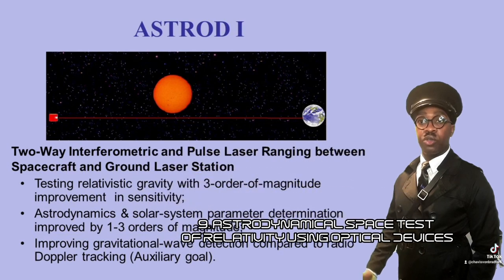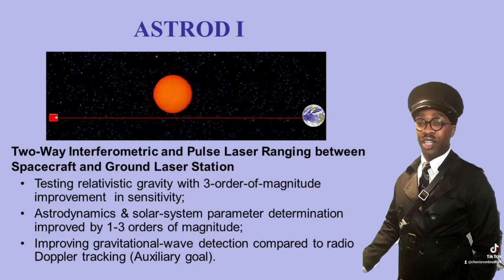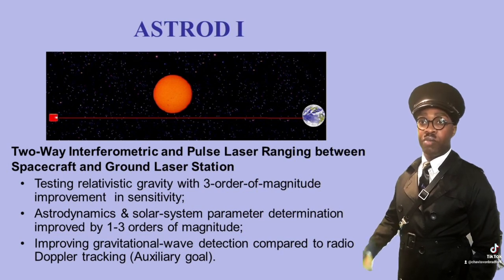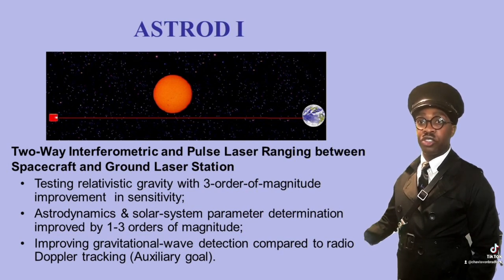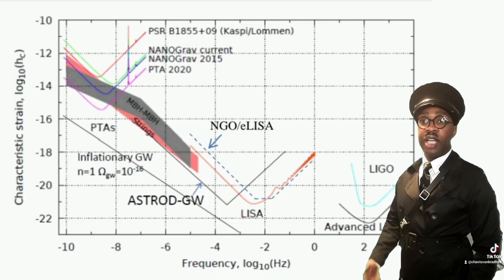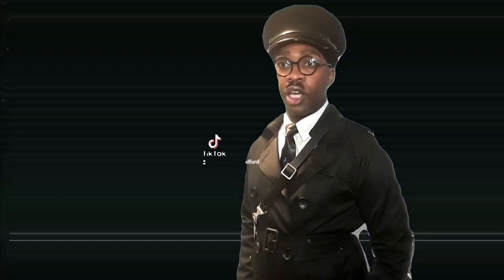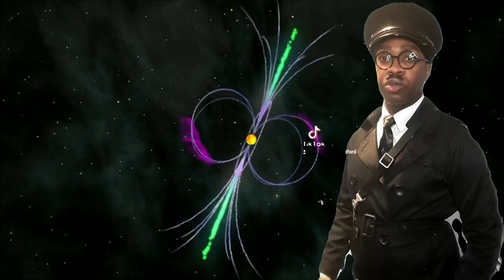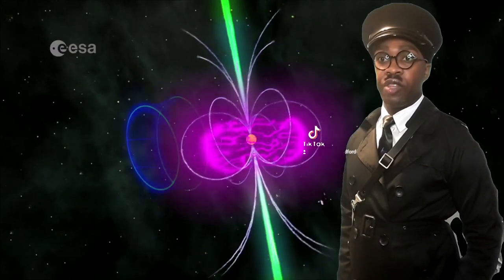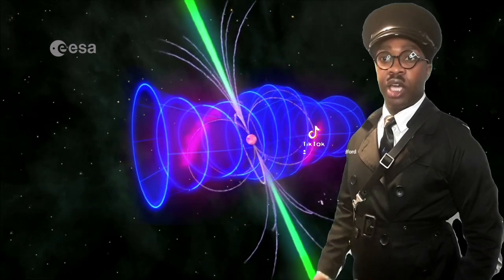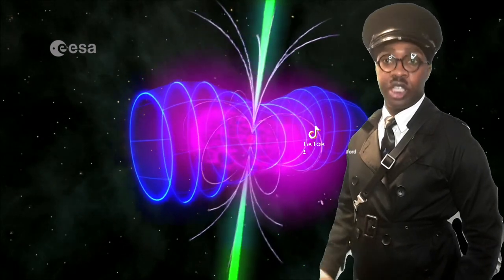ASTROD, which stands for Astrodynamical Space Tests of Relativity using Optical Devices, is an experiment that uses drag-free spacecraft constellations to map the gravitational field of the solar system, measure associated solar system parameters, test relativistic gravity, observe solar g-mode oscillations, and detect primordial gravitational waves. Gravitational wave detection experiments may also detect primordial gravitational waves by monitoring the timing residuals of millisecond pulsars, which have a rotating period of fewer than 10 milliseconds — a signal composed of random gravitational waves.